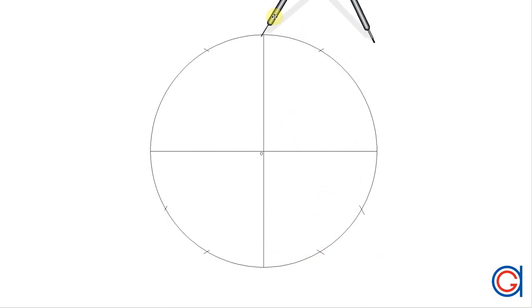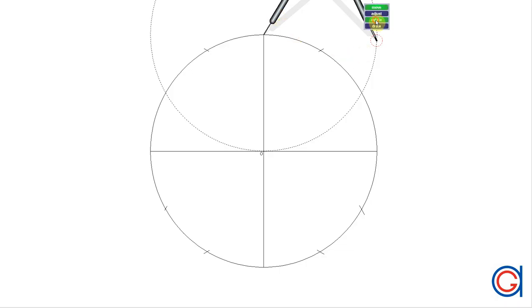And again, setting our compass at the top end of the vertical diameter, we scribe two more arcs on our circumference, on the right and on the left.